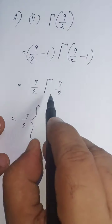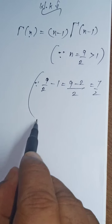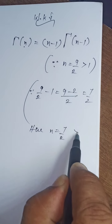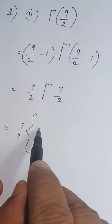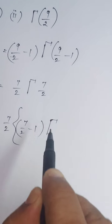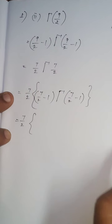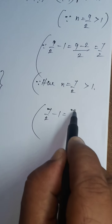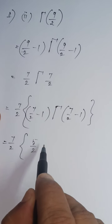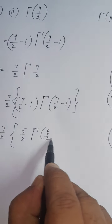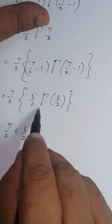Write this 7 by 2 as it is, Gamma of 7 by 2. Once again, apply the same property. Now n equals 7 by 2, which is also greater than 1. Substitute in the same formula: 7 by 2 minus 1 times Gamma of 7 by 2 minus 1. 7 by 2 minus 1 equals 7 minus 2 by 2, which equals 5 by 2. So this can be replaced by 5 by 2 times Gamma of 5 by 2.